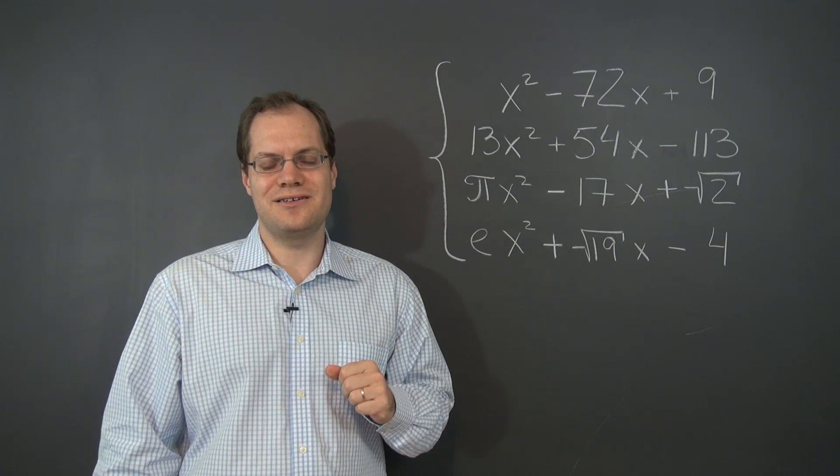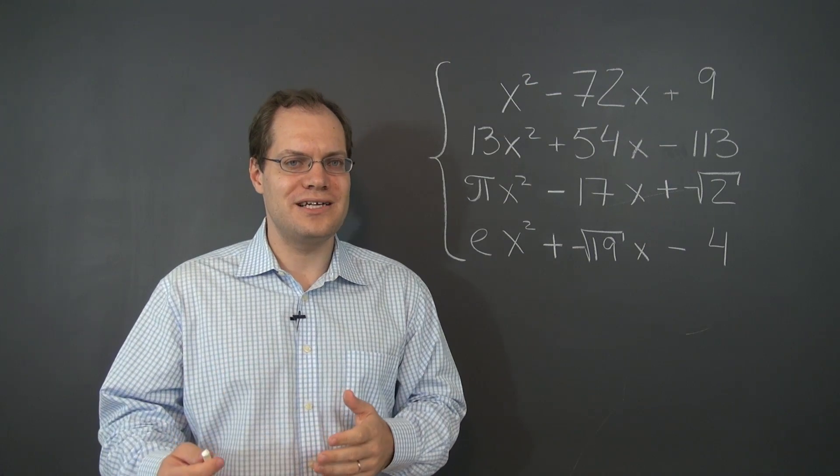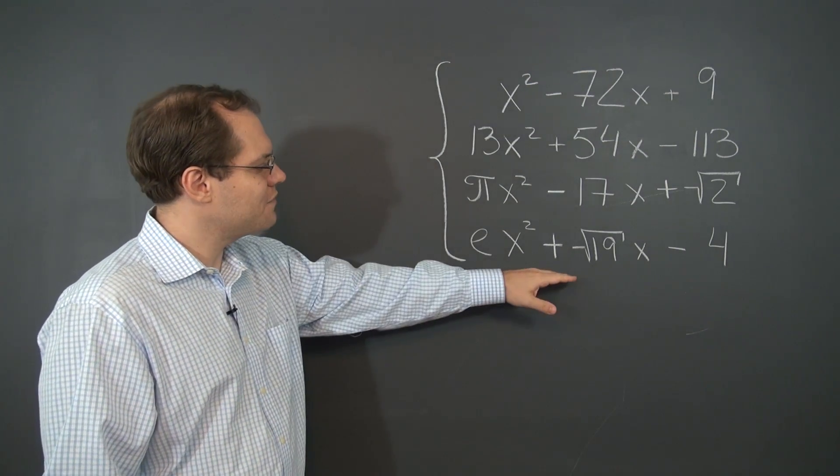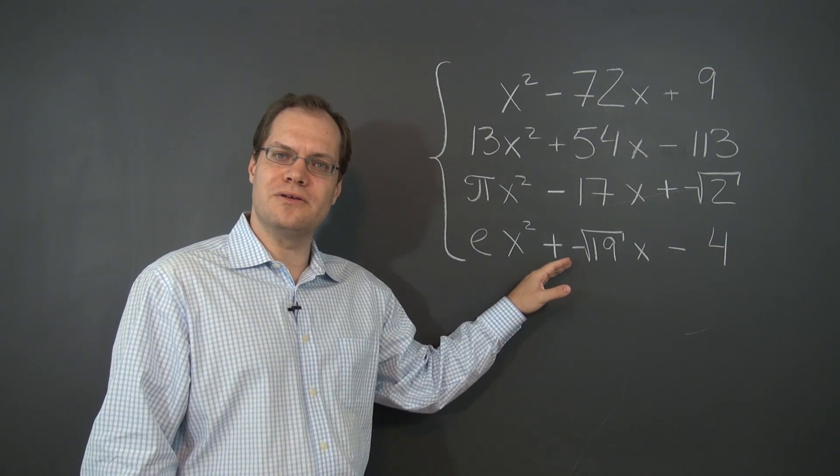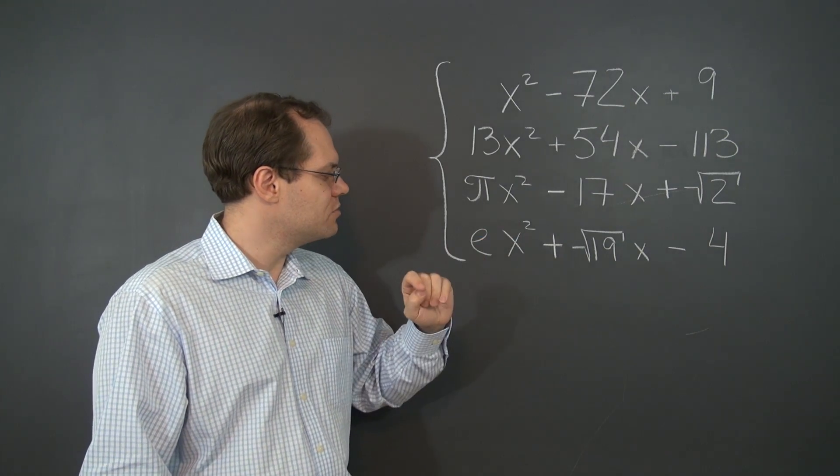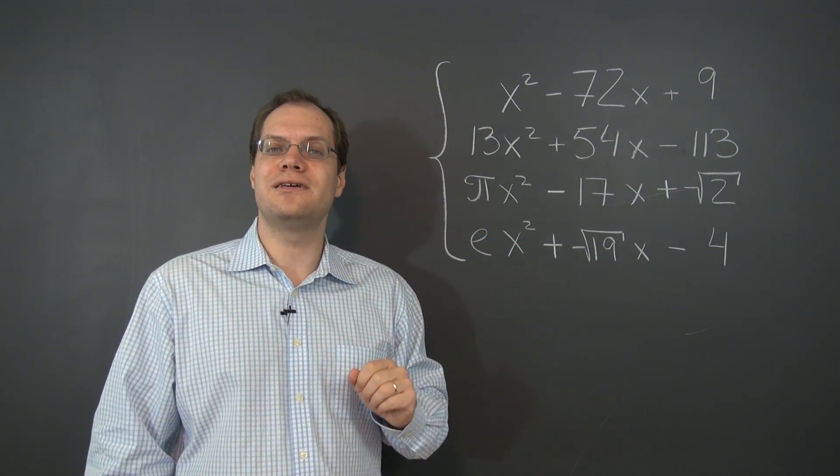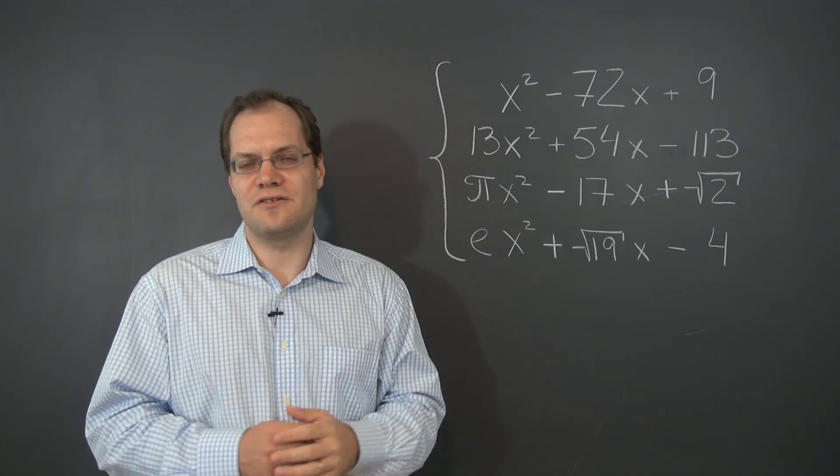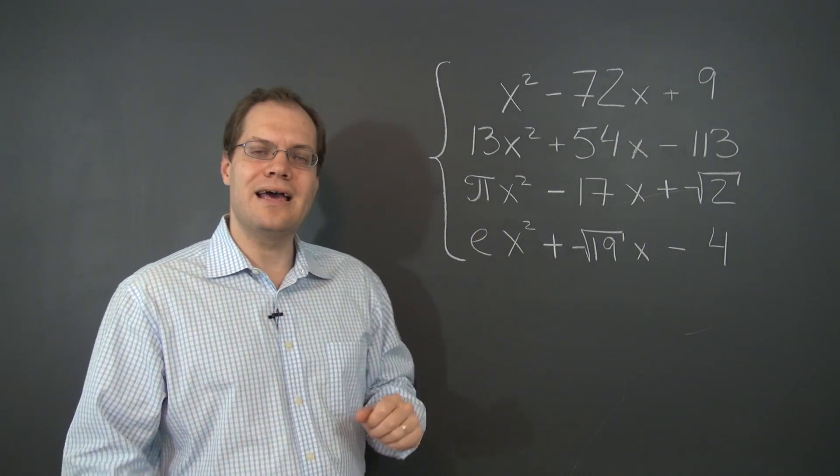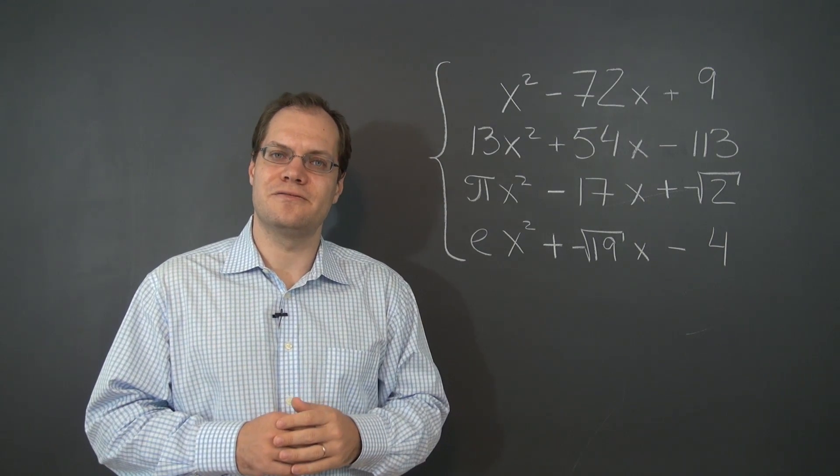Now here is the simple reasoning made possible by the powerful ideas we developed in the earlier videos. What we have here is four quadratic polynomials. So they all belong to the space of polynomials of degree up to two. You can say more loosely that they all belong to the vector space of quadratic polynomials. And there are four of them. And that space is three-dimensional.